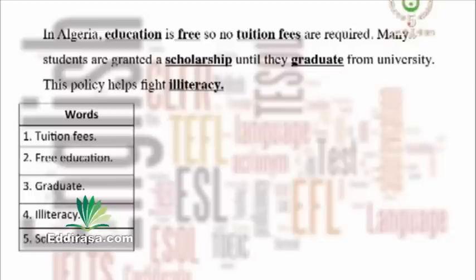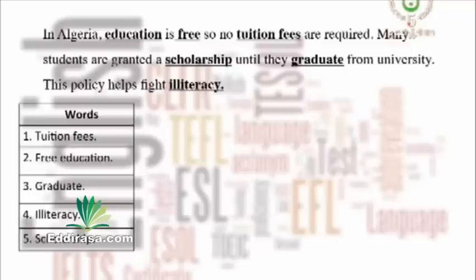Tuition fees is a noun in the plural. Free education is a noun in the singular — it's a compound noun here. Graduate is a verb. Illiteracy is a noun, and scholarship is also a noun in the singular. Now let's read the definitions together and see which one matches with each word.